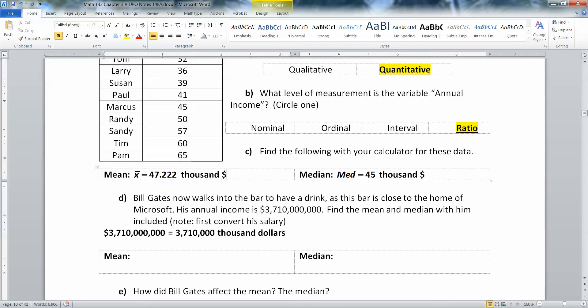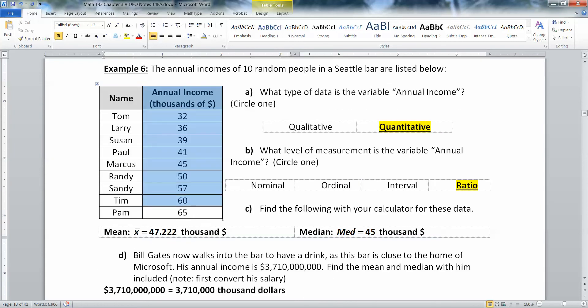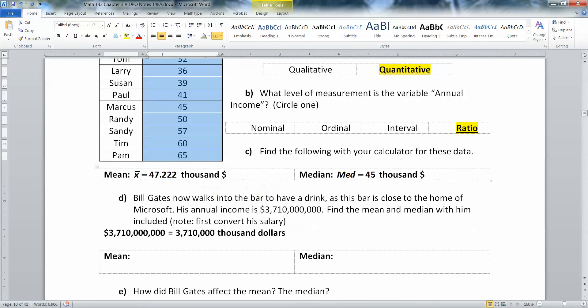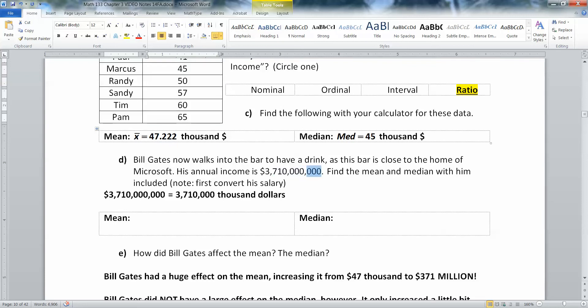Now Bill Gates, co-founder of Microsoft, he walks into the bar because Microsoft is based in Seattle. And he walks in and his annual income is $3,710,000,000. So we are going to find the mean and the median with him in the room. But notice, all of these were in thousand dollars in the first place. So the first thing we have to do is convert his salary, get rid of those three decimal places and make it start at the thousands place because that's our unit. So the first thing we do is move the decimal from over here to the right of that last zero. You're going to move it over here after the thousands place. And then we're going to enter that value into the calculator.